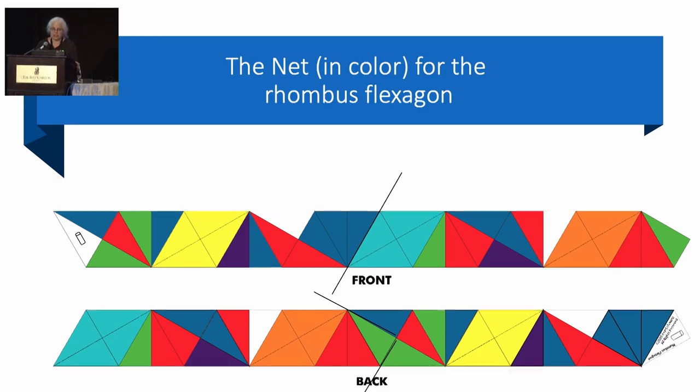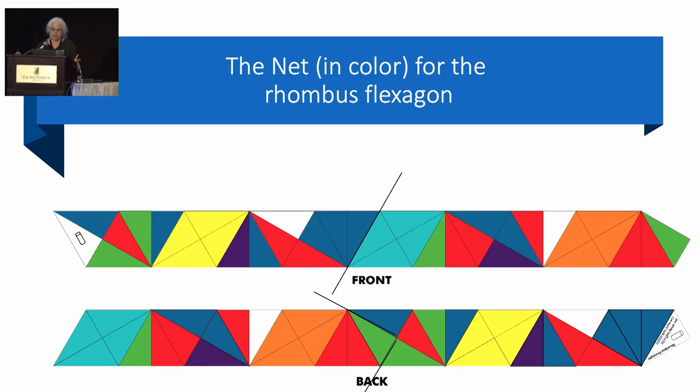And here is the strip all colored for the rhombus. It's the only flexagon strip that I know that uses all the colors that appear in the flexagon on both sides of the strip. You can see the front and the back. And when I first looked at it, I didn't see any pattern. But when you divide the strip in half, you see that the halves mirror each other.